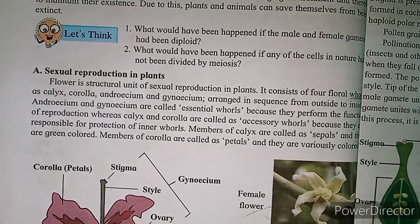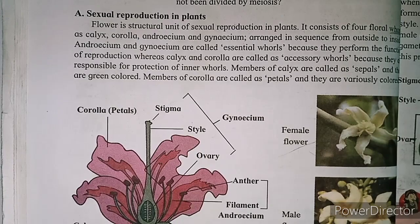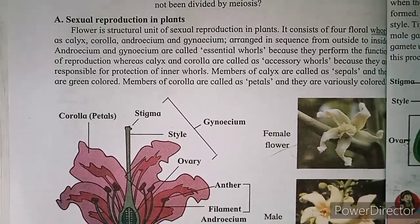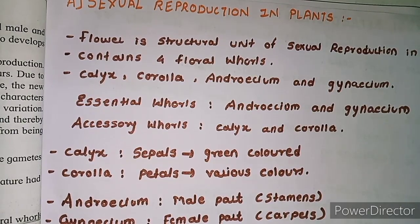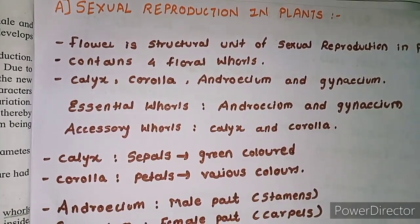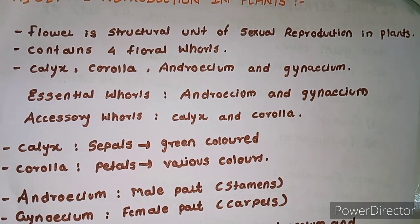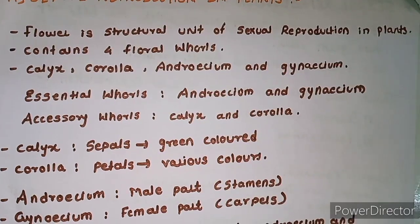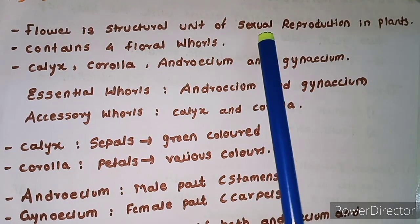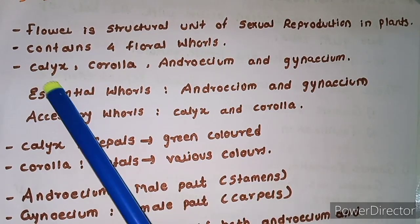We will see sexual reproduction in plants, and after that sexual reproduction in humans. The flower is the structural unit of sexual reproduction in plants. It contains four floral whorls: Calyx, Corolla, Androecium, and Gynaecium. The essential whorls are Androecium and Gynaecium; the accessory whorls are Calyx and Corolla.